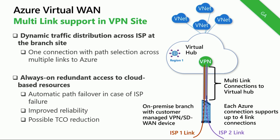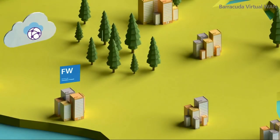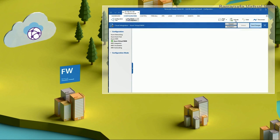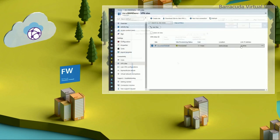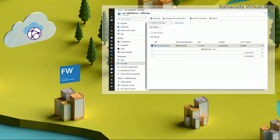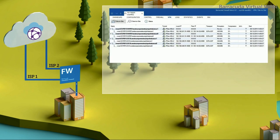Barracuda is the first partner to actually have done it, so let's look at what they have in store for us. The Barracuda Cloud Gen firewall and Azure Virtual WAN offer seamless cloud connectivity for multi-link branches, providing always-on access to Azure. Connecting is easy — a simple one-step setup populates VPN site and link information in the Virtual WAN and establishes VPN tunnels without the need for additional interaction.